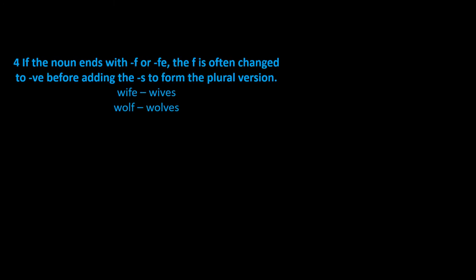Rule 3: If the noun ends with F or FE, the F is often changed to VE before adding the S to form the plural version. Examples include wife becomes wives, wolf becomes wolves.